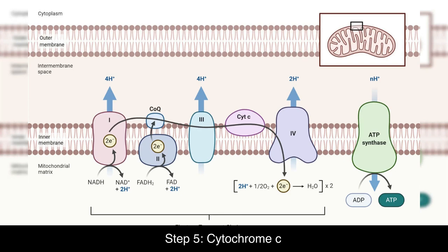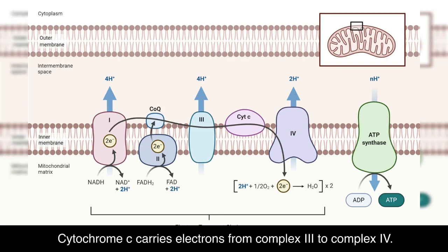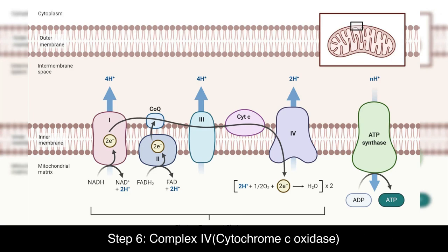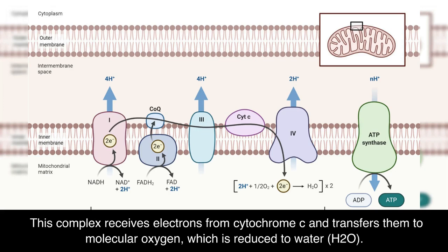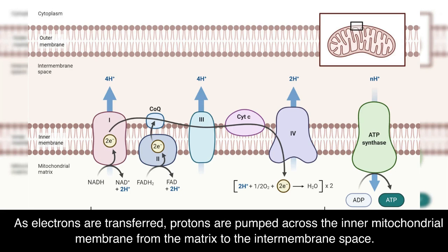Step 5: Cytochrome C carries electrons from Complex III to Complex IV. Step 6: Complex IV — cytochrome C oxidase. The final complex in the ETC is Complex IV, also known as cytochrome C oxidase. This complex receives electrons from cytochrome C and transfers them to molecular oxygen, which is reduced to water (H2O). As electrons are transferred, protons are pumped across the inner mitochondrial membrane from the matrix to the intermembrane space.